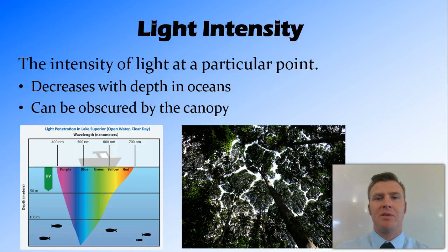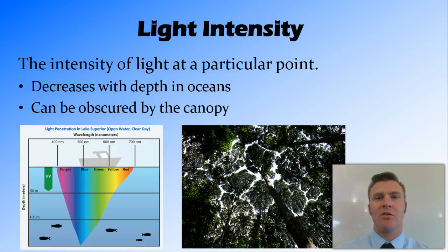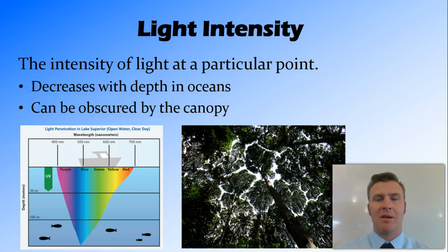Another example is in a rainforest: because of the dense canopy at the top, the plants living on the ground have quite low light intensity. So while the light intensity at the top of the canopy is high, at the base of the trees it is low.